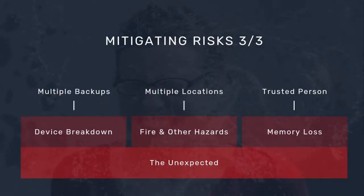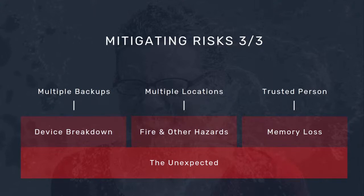The third category is unexpected events. Your device could break — your phone, laptop, or a USB stick. You should not rely on a single device. Have a backup and put it in multiple places. If you have just one backup on a USB stick, USB sticks don't last forever — one day you might find it no longer works. So don't rely on a single device, and account for the fact that everything can break and will break.